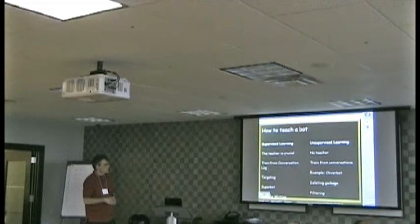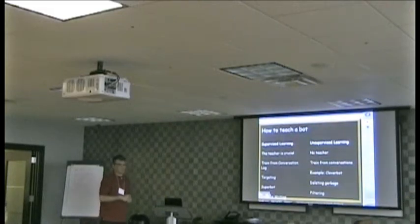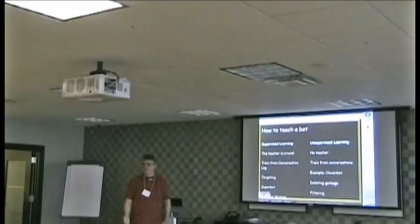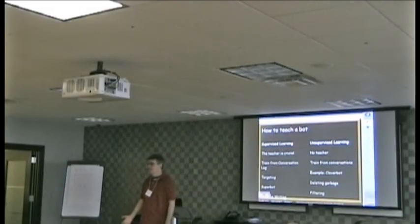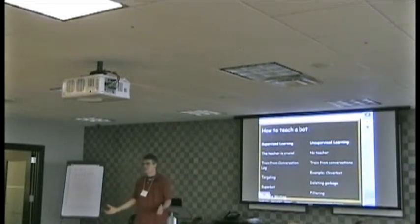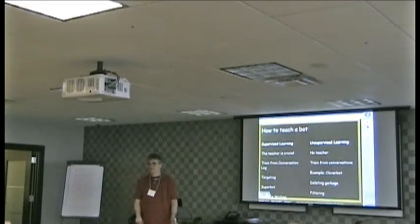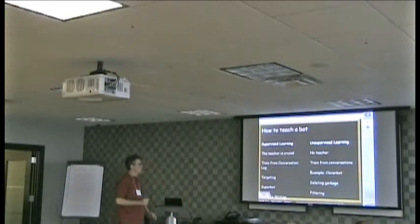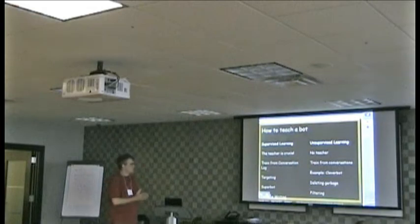A couple of years ago we also released a technology called the SuperBot, which is a kind of blank template for a bot. It's a list of the top 10,000 most activated patterns in the Alice bot. Somebody who wants to create a bot with a distinct personality from Alice can take that list of patterns and fill in the blanks to create unique responses different from the Alice bot's responses. These are examples of training a bot through supervised learning.